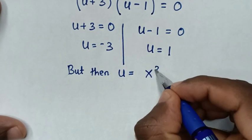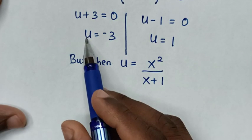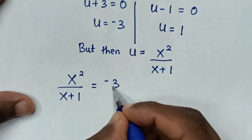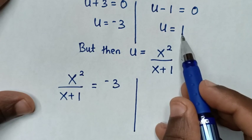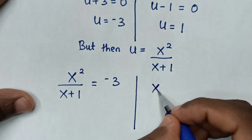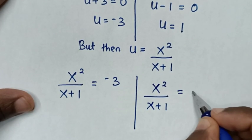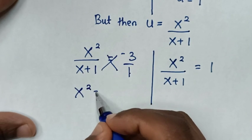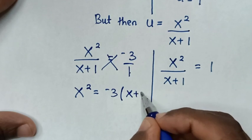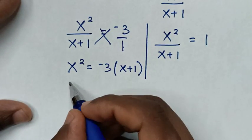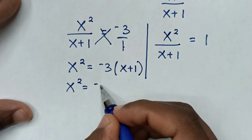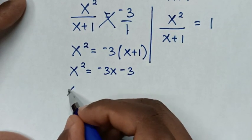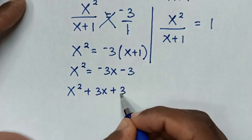From u equal to x squared over (x plus 1), substituting u equal to negative 3 gives x squared over (x plus 1) is equal to negative 3. Cross multiplying gives x squared equal to negative 3 times (x plus 1), so x squared equal to negative 3x minus 3. Taking everything to one side: x squared plus 3x plus 3 is equal to 0.